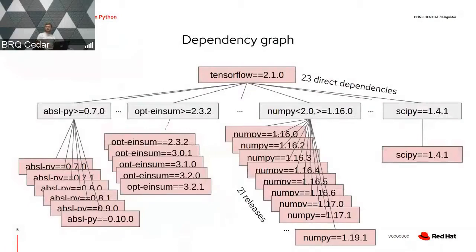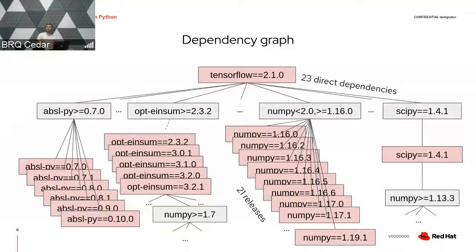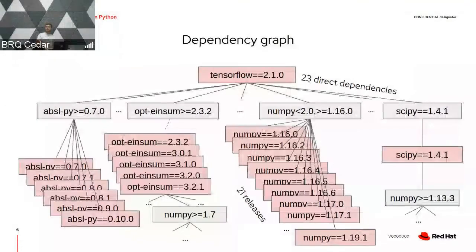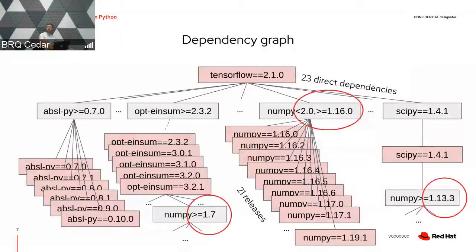The same can be applied for other dependencies — basically for all 23 direct dependencies of TensorFlow. These are just direct dependencies, and to inspect the whole dependency graph we need to also look at transitive dependencies of TensorFlow, meaning dependencies of direct dependencies. For example, opt-einsum depends on NumPy, SciPy also depends on NumPy, but with different version range specifications in comparison to the dependency stated for TensorFlow in version 2.1.0.